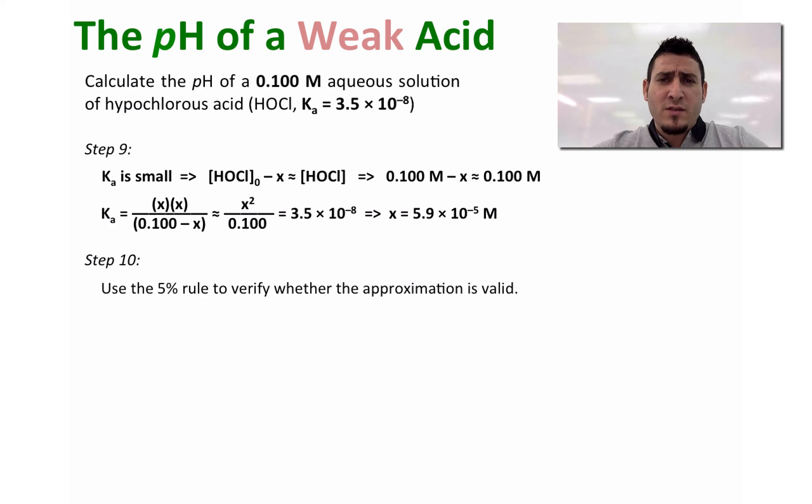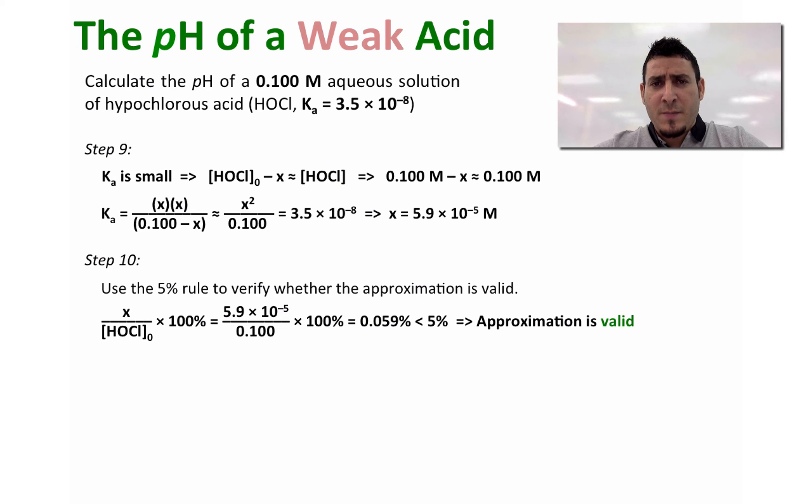To verify this, we divide x by the initial concentration of the hypochlorous acid multiplied by 100%. If the answer is less than 5%, our approximation will be valid. We can see that the answer is 0.059%, which is smaller than 5%, and therefore our approximation is valid.